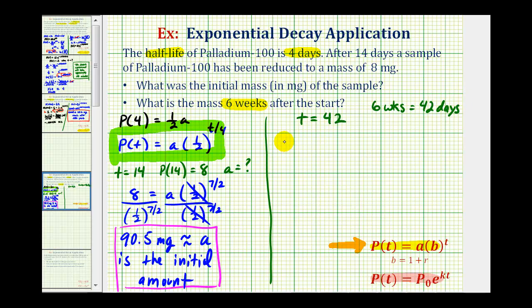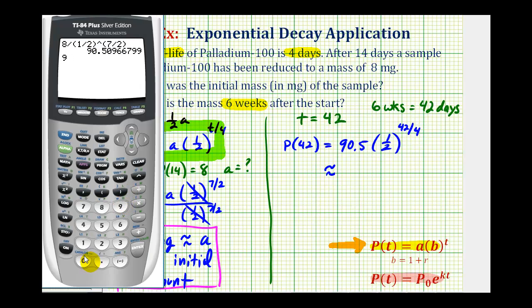So we have P of 42 going to be equal to the initial amount, which is approximately 90.5 times one-half raised to the power of 42 divided by four. This does simplify to 21-halves, but we'll go ahead and leave it in this form and go to the calculator. So 90.5 times one-half raised to the power of, let's just say, 21-halves. We do need this exponent in parentheses.